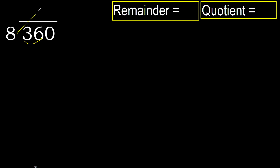8 multiplied by which number is nearest to 36 but not greater? 8 multiplied by 5 is 40, which is greater. 8 multiplied by 4 is 32, which is not greater.